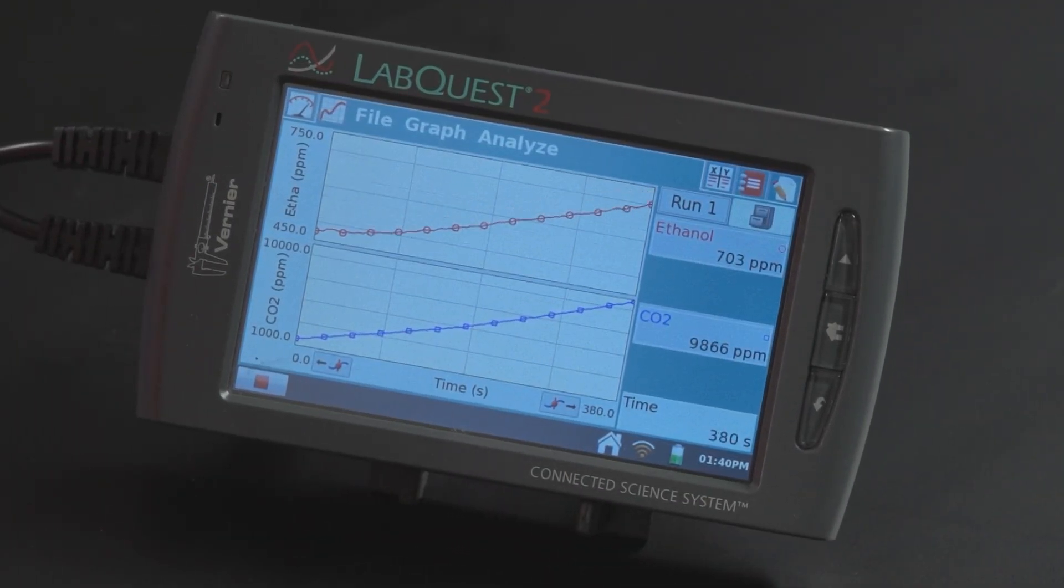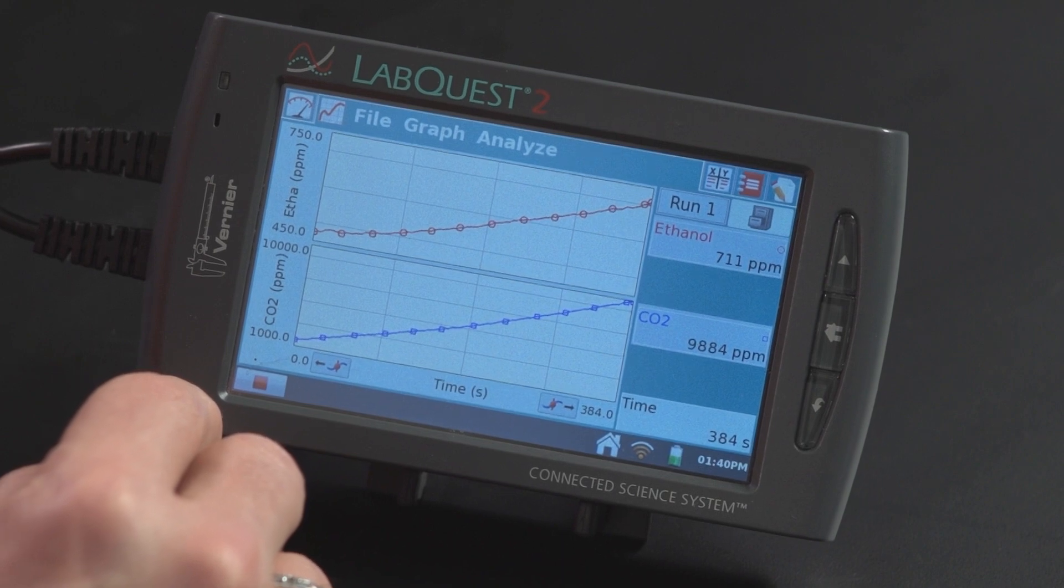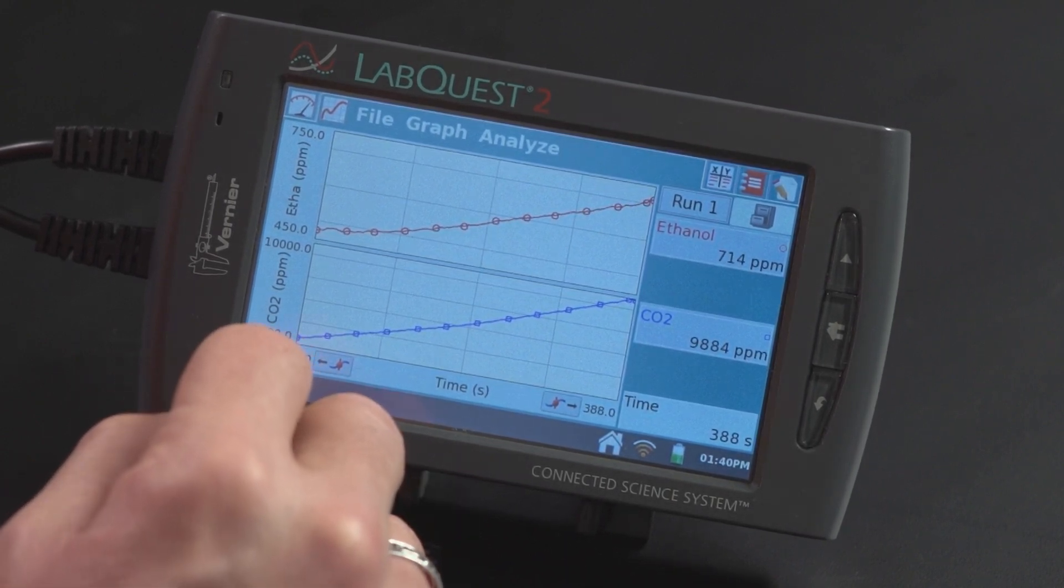So you can see right now it's been about just over 5 minutes. And we're getting to the maximum amount that the CO2 sensor can take, which at the low setting is about 10,000 PPM. So I'm going to stop it.